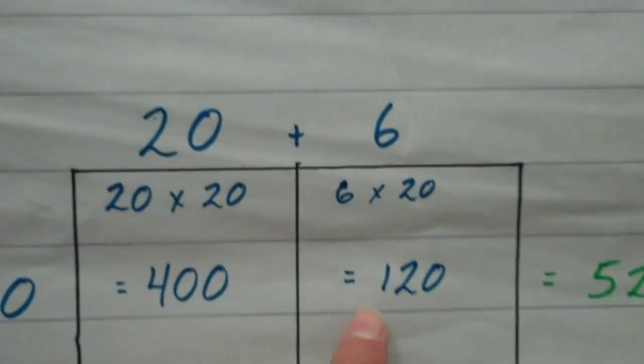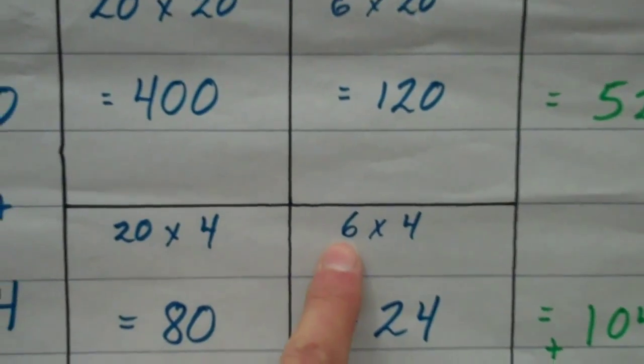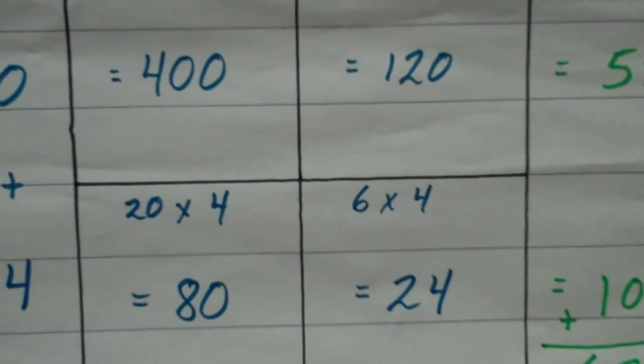And in this box, I have 6 and I have 4. I multiply those two numbers, 6 times 4 equals 24.